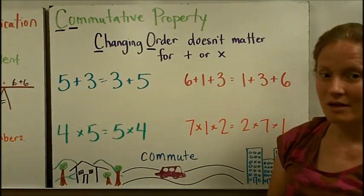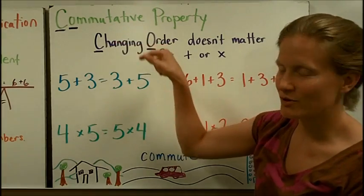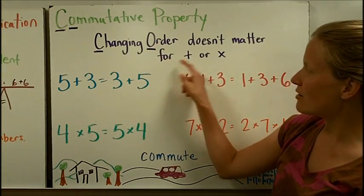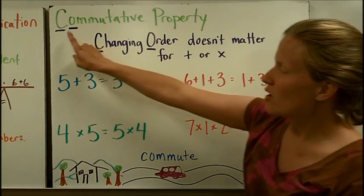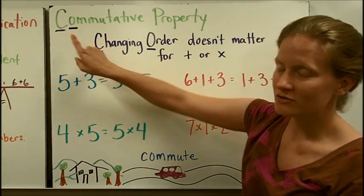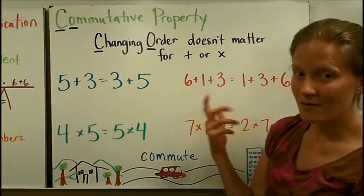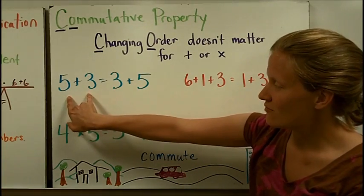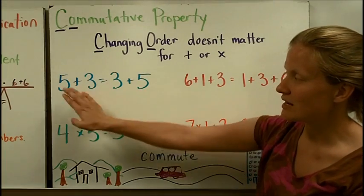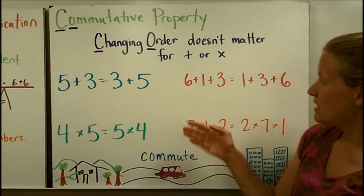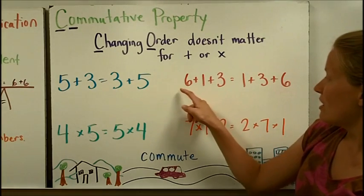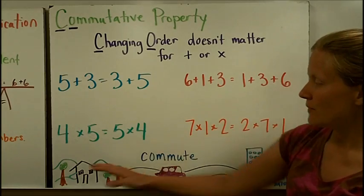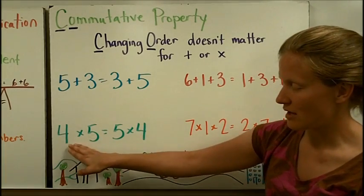The next property is the commutative property. Notice that there's no N in this word. Commutative means that changing order doesn't matter for addition or multiplication. I've marked CO in commutative to remind you of changing order. So in the commutative property, switching the order doesn't matter. For example, if I switch around the 5 and the 3 — put the 3 first and the 5 second — both sides are still going to equal 8. With 3 numbers like 6, 1, and 3, if I change the order, they're still going to be worth the same amount.